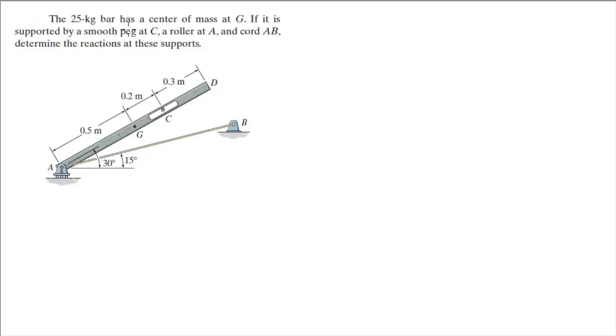Alright guys, let's do this problem where you have a 25kg bar that has a center of mass at G. That right off the bat tells us that there is a force right here at G going down, which is the weight. If it is supported by a smooth peg at C, a roller at A and a chord at AB, determine the reactions at these supports.